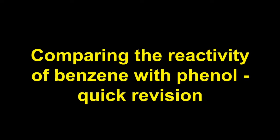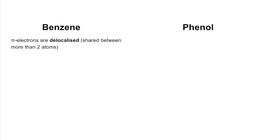Quick revision video comparing the reactivities of benzene and phenol. Starting with benzene, the pi electrons are delocalised — shared between more than two atoms, and in the case of benzene they're shared between all six carbon atoms. That gives it a low electron density.